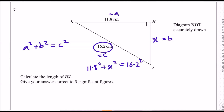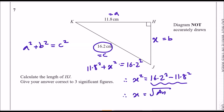Subtract 11.8² across, so we have x² = 16.2² − 11.8². Put this into the calculator exactly as you see it and then square root your answer. When you do that, you should get a result to three significant figures of 11.1 centimetres.